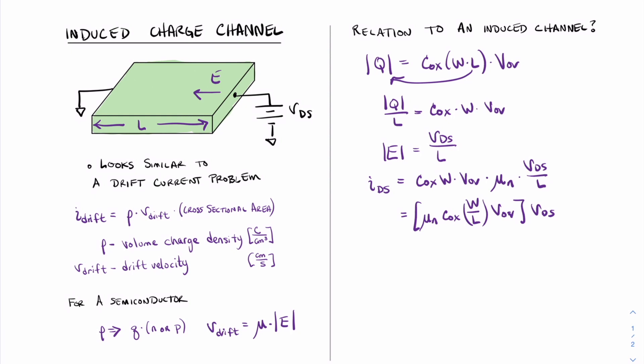And this is pretty much the final equation for the current from drain to source in this induced channel. But there's a few things we can remember about drift current. In fact, we might recall that drift current is in fact a relationship of Ohm's law.